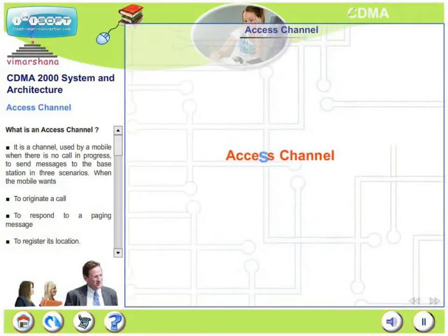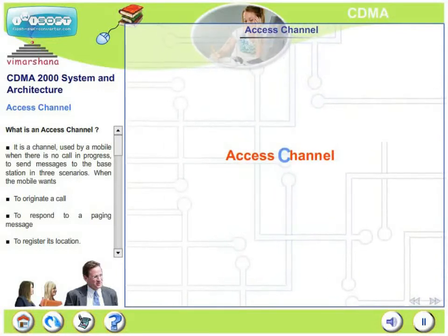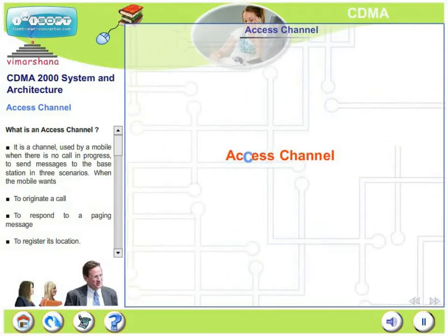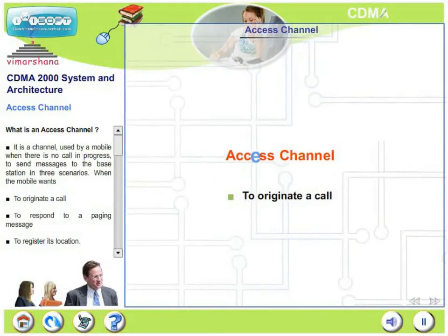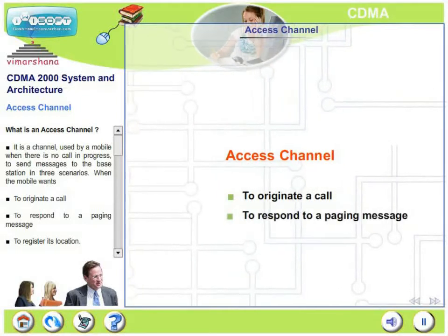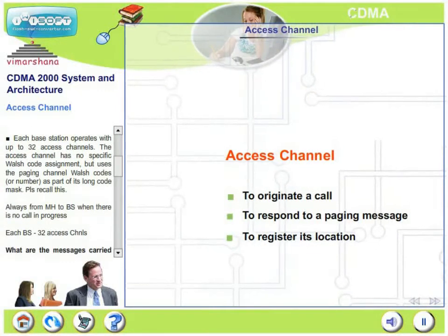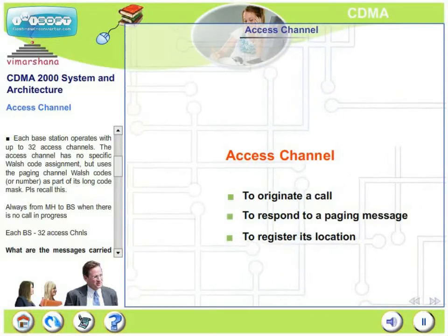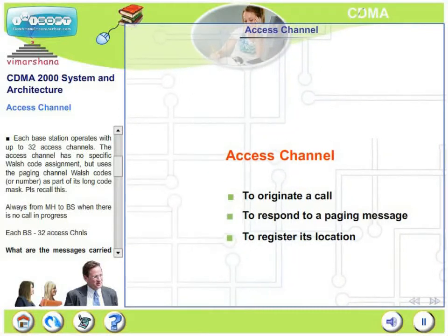Let's look at access channels. An access channel is used by the mobile when there is no call in progress to send messages to the base station. There are three scenarios: when the mobile wants to originate a call, when it wants to respond to a paging message, or when it wants to register its location. Each base station operates with up to 32 access channels. The access channel has no specific Walsh code assignment but uses the paging channel Walsh codes as part of its long code mask.